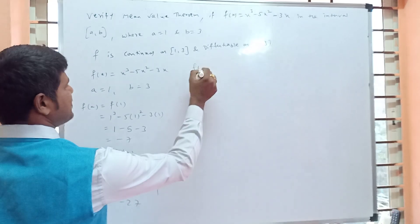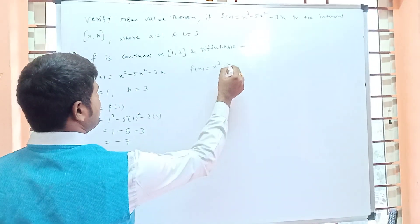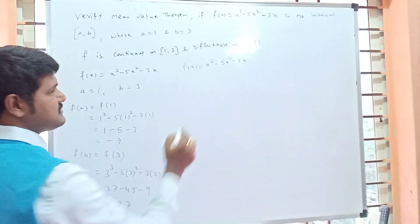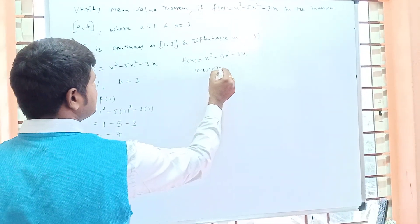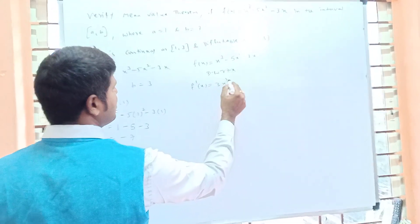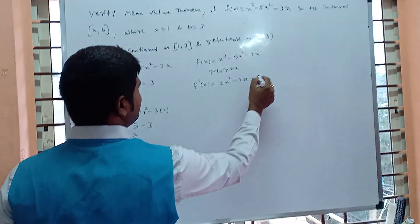Now again consider f(x) = x³ - 5x² - 3x. Find f'(x). Differentiate with respect to x: f'(x) = 3x² - 10x - 3.